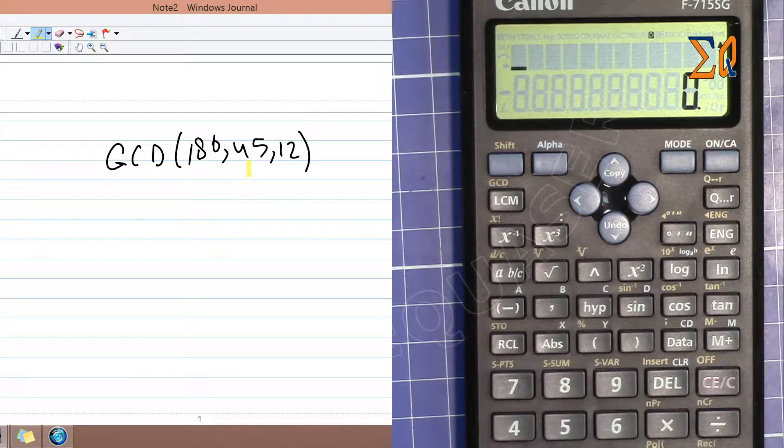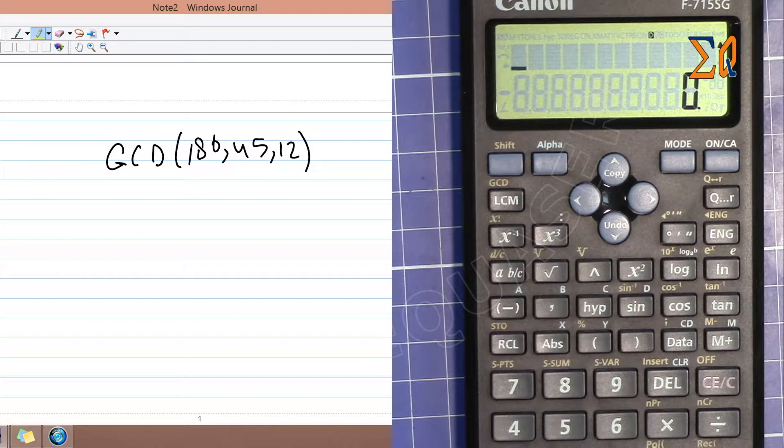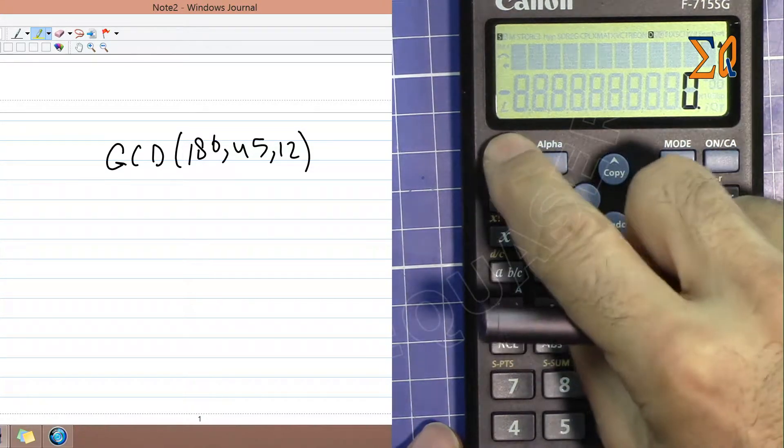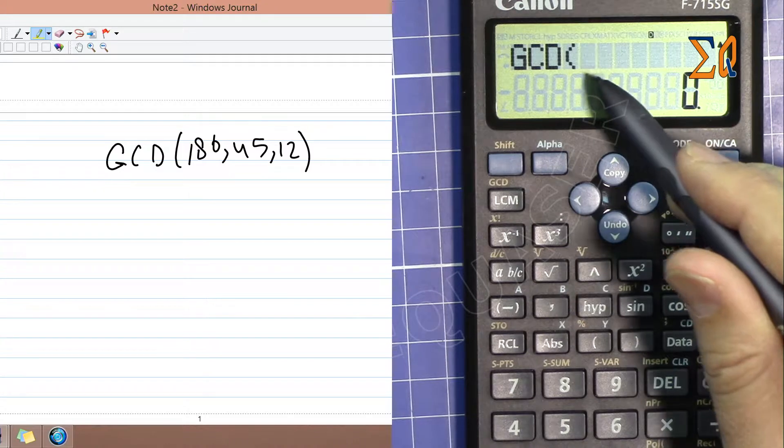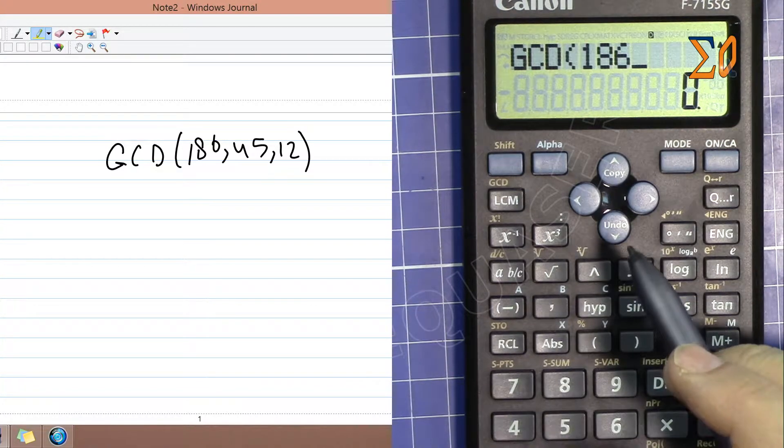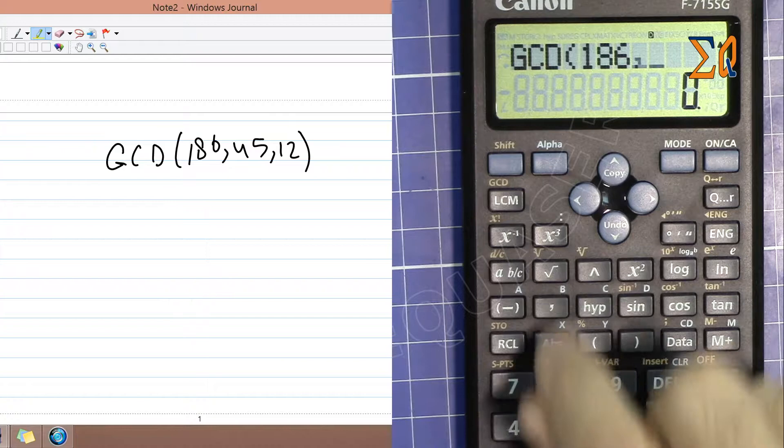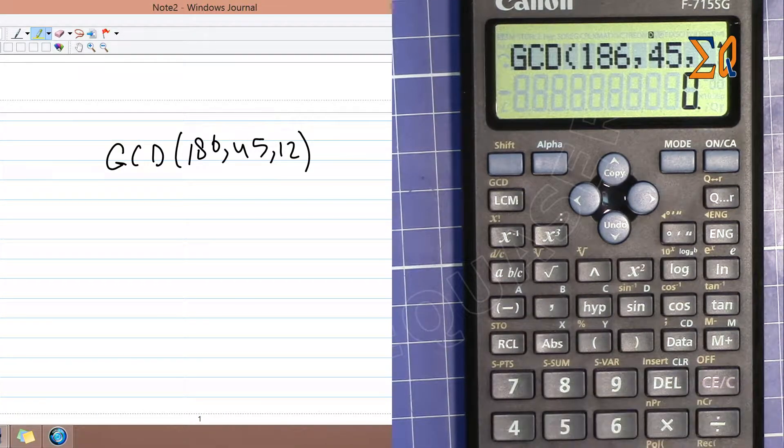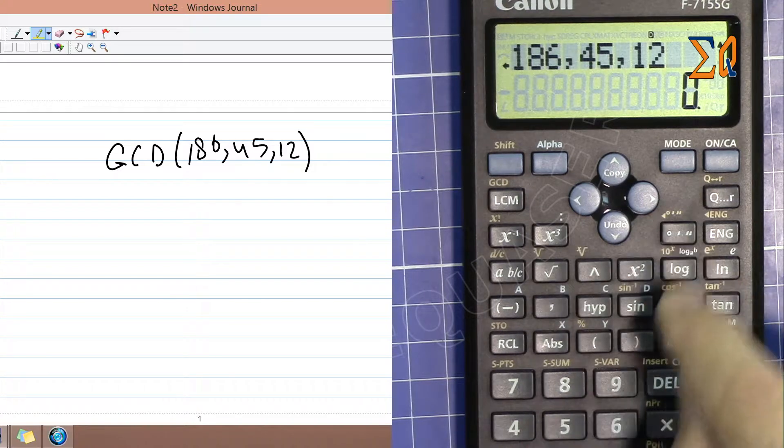Let's get started. GCD of 186, 45, and 12. To find the GCD we press shift and the parenthesis button. Then we enter 186. To separate the values we press the comma, then 45, press comma, then 12, and close the parenthesis.